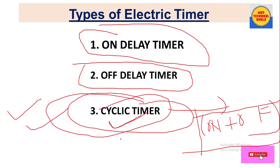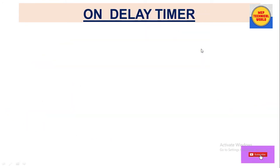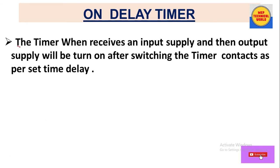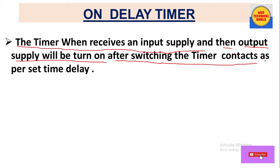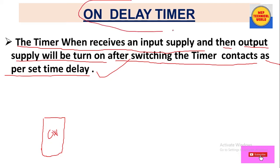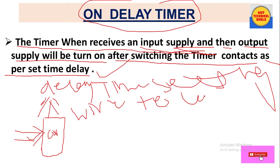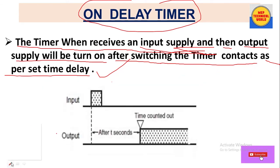Let's move on to the on delay timer. What is an on delay timer? When the timer receives an input supply, the output supply will turn on after the timer contacts switch, as per the set time delay. It means when an on delay timer receives the input supply, the output will only turn on when the delay set time is reached.